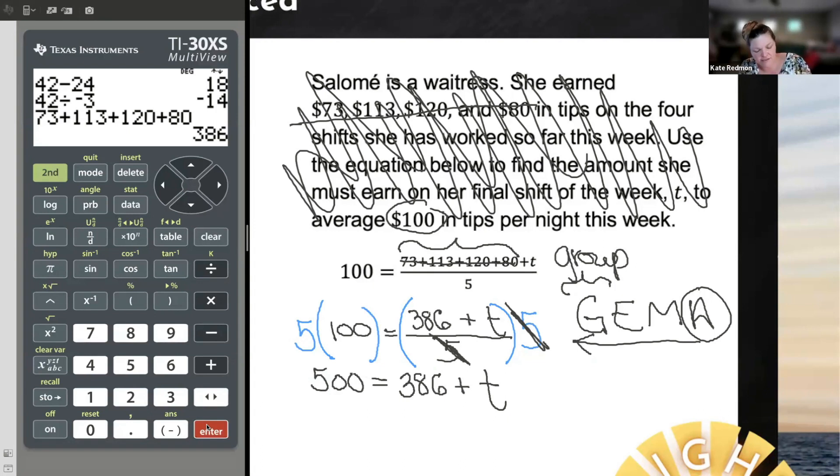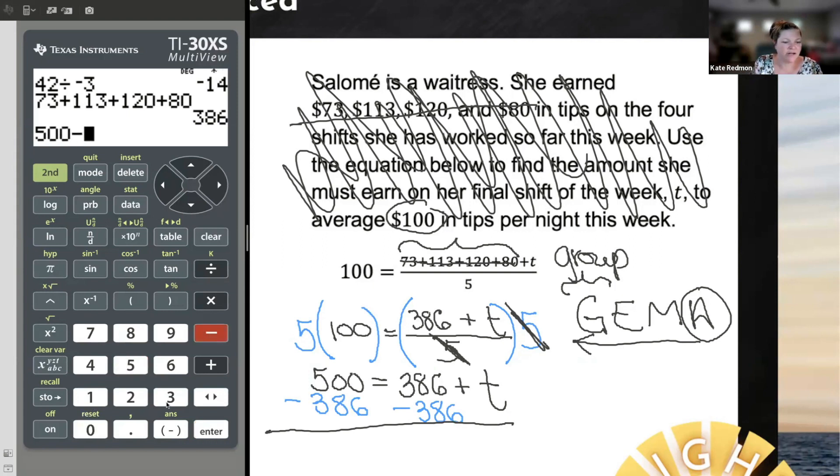And now I can subtract away that 386 from both sides. And 500 minus 386. Again, I'm doing in my calculator because I don't want to make a silly subtraction with zero error. And I get 114. And on this side, 386 minus 386 is nothing. It zeroes out. And so I just have nothing plus T as zero plus T or just T. If you add nothing with T, you have T. And we can see how much she needs to earn in tips. She needs to earn $114 in tips if she wants to average $100 a night. Just straight algebra skills. Not even that tricky.